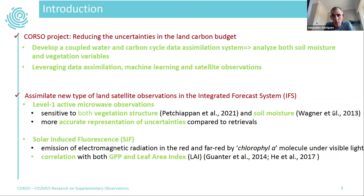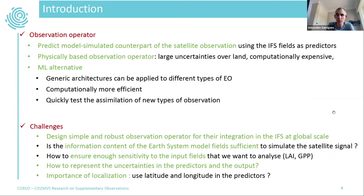We also want to test a new type of observation: SIF. Solar-induced fluorescence is the emission of electromagnetic radiation in the red and far-red by chlorophyll molecules. It is well correlated with both GPP and leaf area index. At satellite scale, what we observe is the canopy SIF, which integrates both GPP and structural index components.